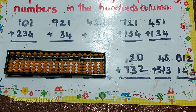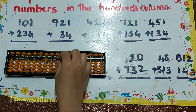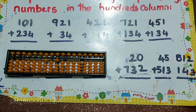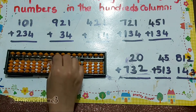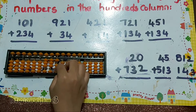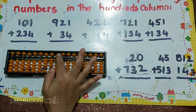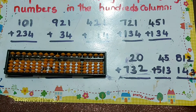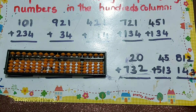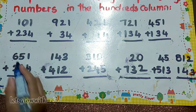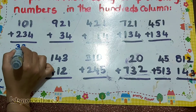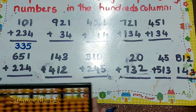Are you able to see? Yes. Okay, 101 plus 234. How to add: 4 plus — minus 1, so what's the answer? Three three five. 335, okay.